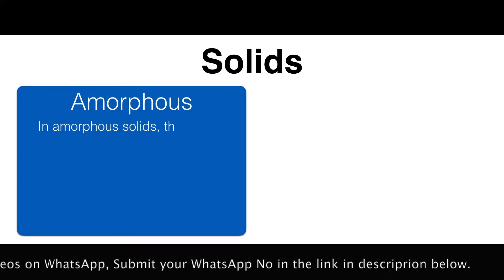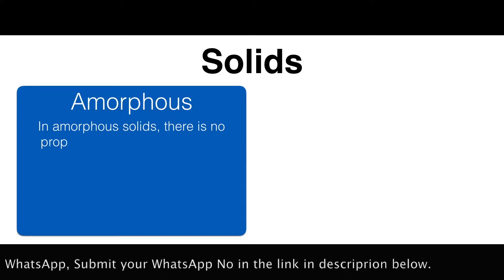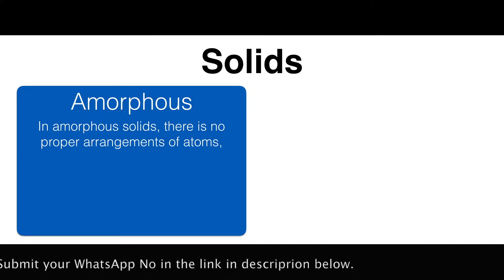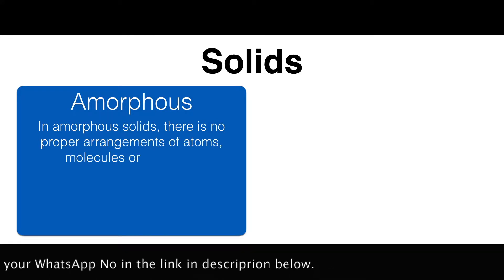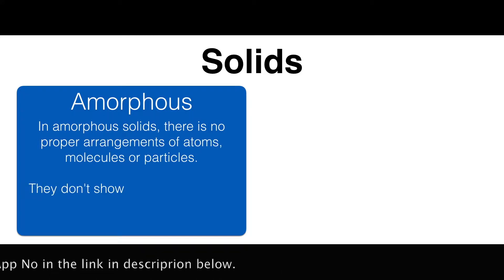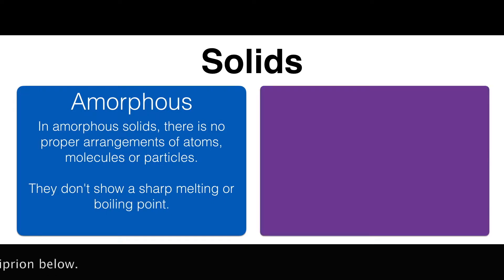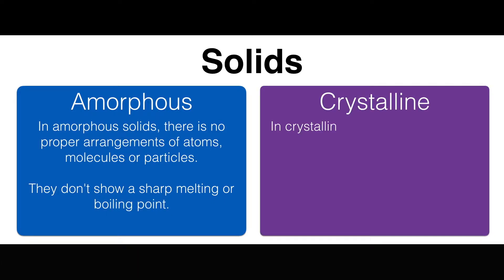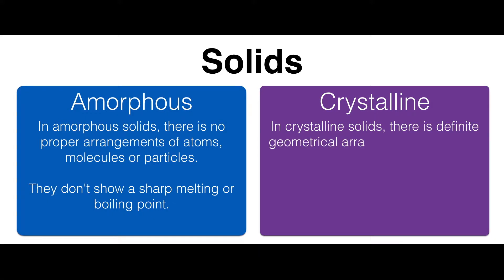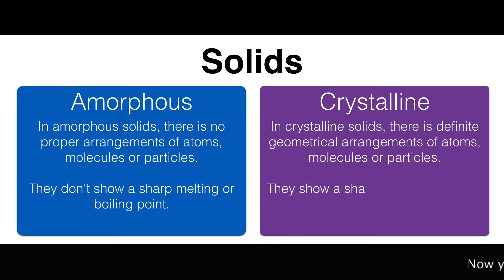In amorphous solids there is no proper arrangement of atoms, molecules or particles. They don't show a sharp melting or boiling point. In crystalline solids there is a definite geometrical arrangement of atoms, molecules or particles. They show a sharp melting or boiling point.